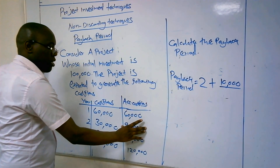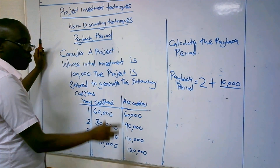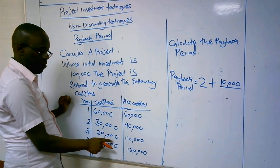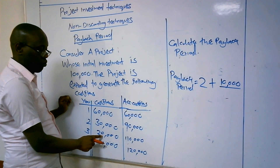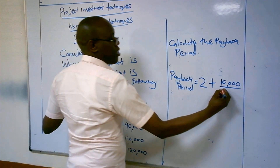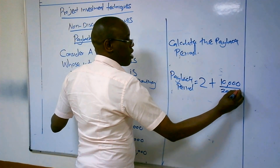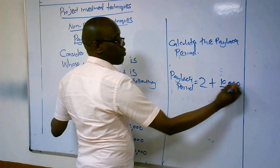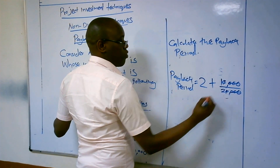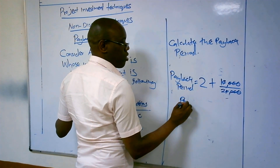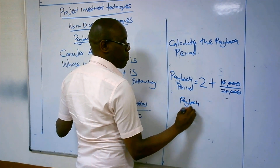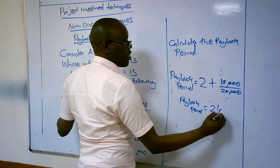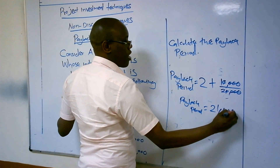Since the remaining $10,000 is to be recovered in year three, you divide that $10,000 by the cash flow of year three, which is $20,000. So $10,000 divided by $20,000 equals 0.5. Therefore, the payback period is two and a half years.